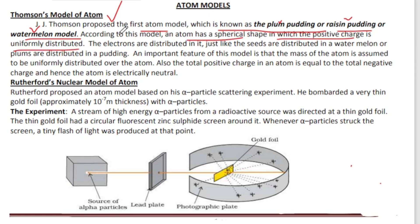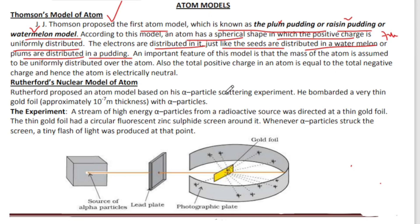In J.J. Thomson's atom model, the positive charge is uniformly distributed. The electrons are distributed in it just like the seeds are distributed in a watermelon, and the plums are distributed in a pudding. An important feature of this model is that the mass of the atom is assumed to be uniformly distributed over the atom.